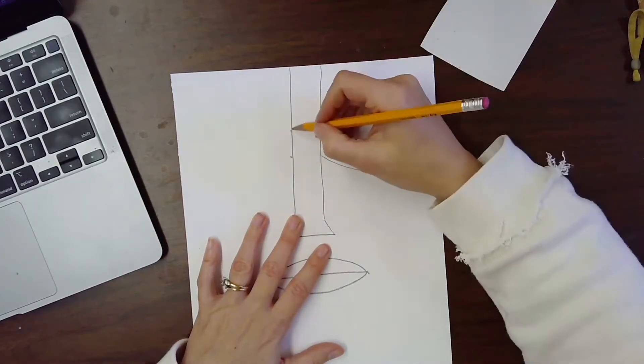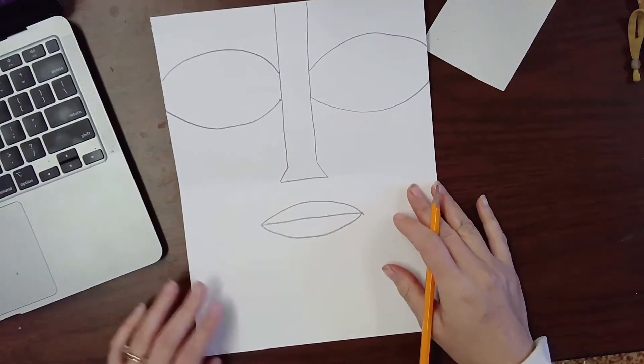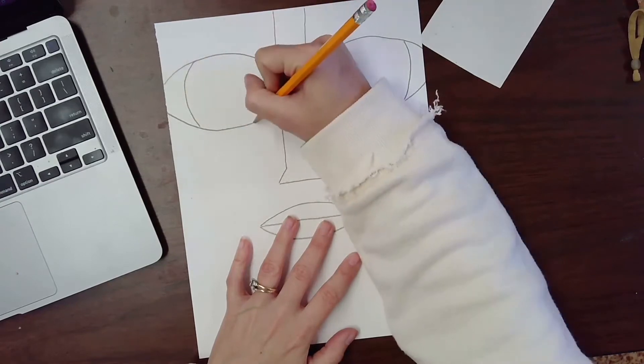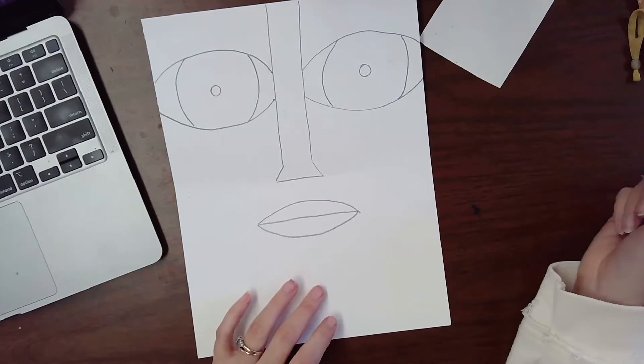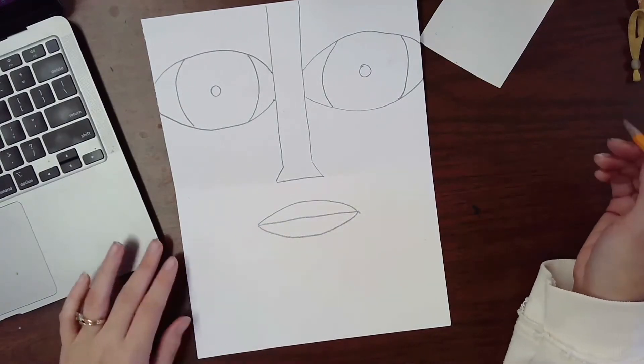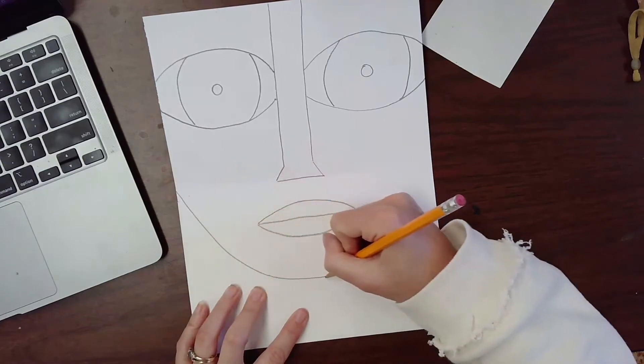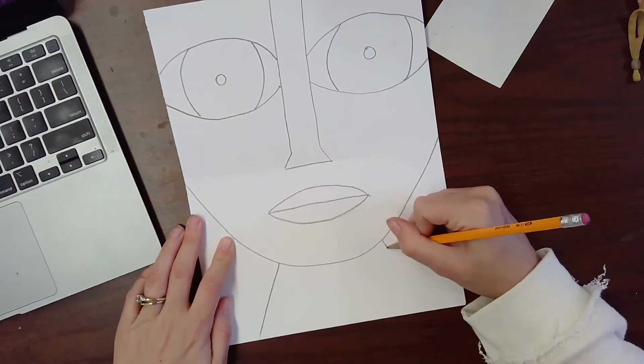Inside the eye, curved lines for the iris and a circle right in the middle. Now you're going to make a big letter U for the chin and some straight diagonal lines for the neck.